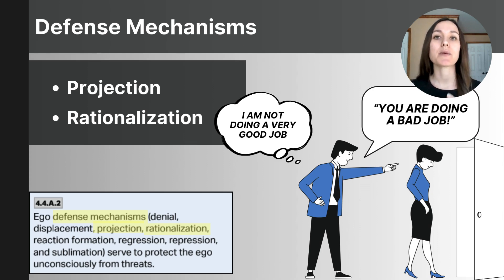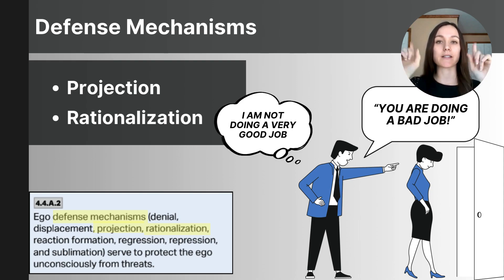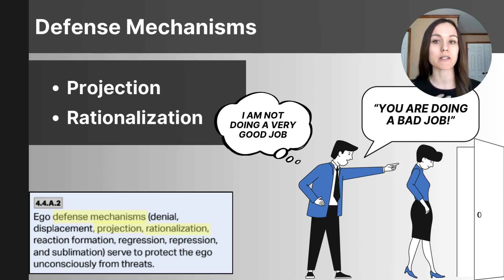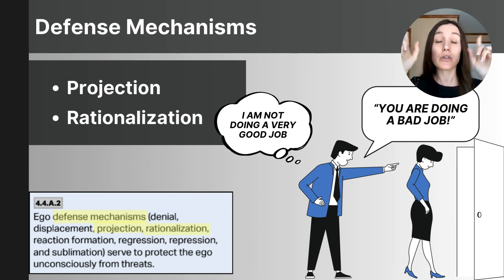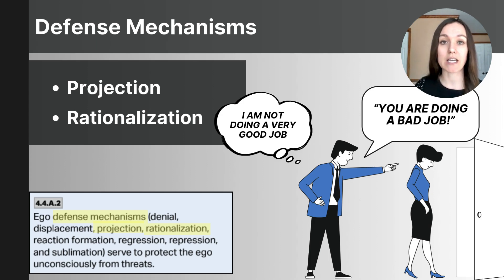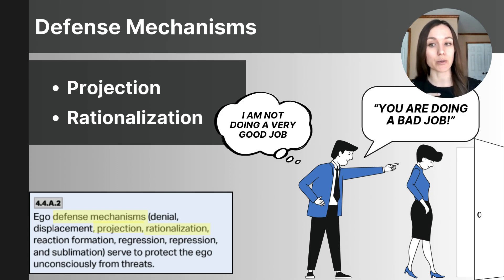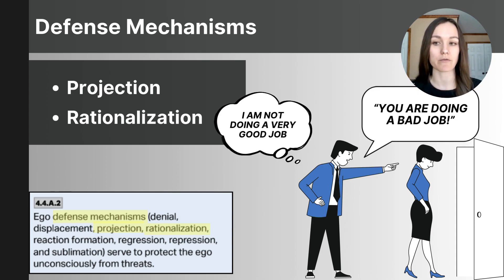Projection occurs when someone attributes their own unacceptable feelings to someone else. For example, if a person feeling insecure about their abilities accuses others of being insecure or incompetent, that's projection. Similarly, if a partner who is cheating feels guilty about their disloyalty and then accuses their partner of being unfaithful, that's also projection.